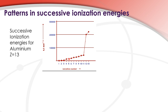As the electrons are being removed from the second main energy level, you can see that the ionization energy increases. That's because the number of protons is remaining constant but the number of electrons is decreasing, so the protons have more of a pull on the remaining electrons.